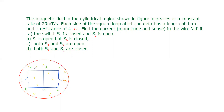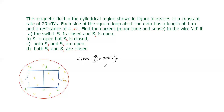Here the loop ABCDEFA is given. The magnetic field is directed into the plane. This magnetic field changes at the rate of 20 milli-tesla per second. So dB/dt is equal to 20 × 10⁻³ tesla per second, and each side is one centimeter.